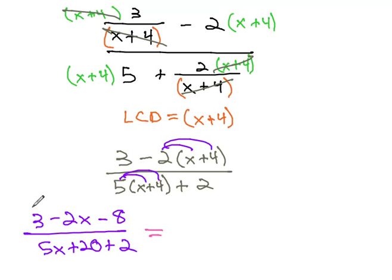Combine like terms to give us negative 2x minus 5 over 5x plus 22.